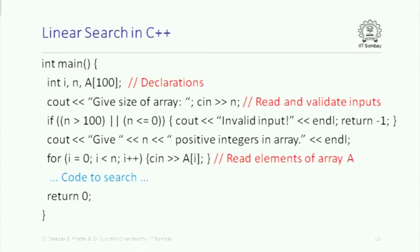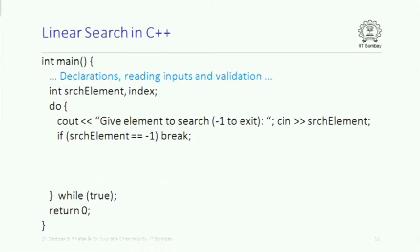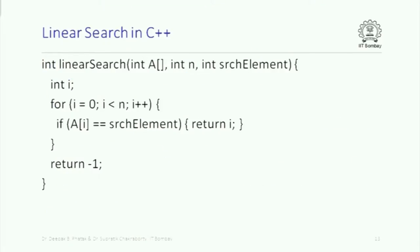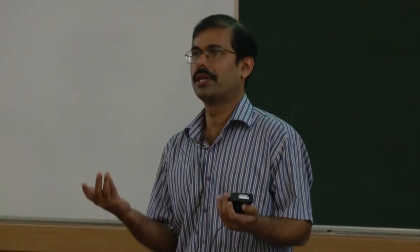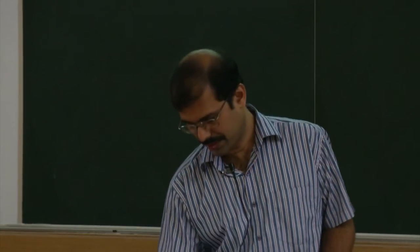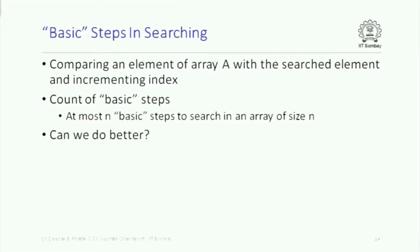The simplest approach is linear search: iterate over the array, and if the current element matches the search element, return its index; otherwise return -1 after traversing the entire array. How many basic steps does this take for an array of n elements? It takes n basic steps — you have to look at every element in the worst case. The question is: can we do better?